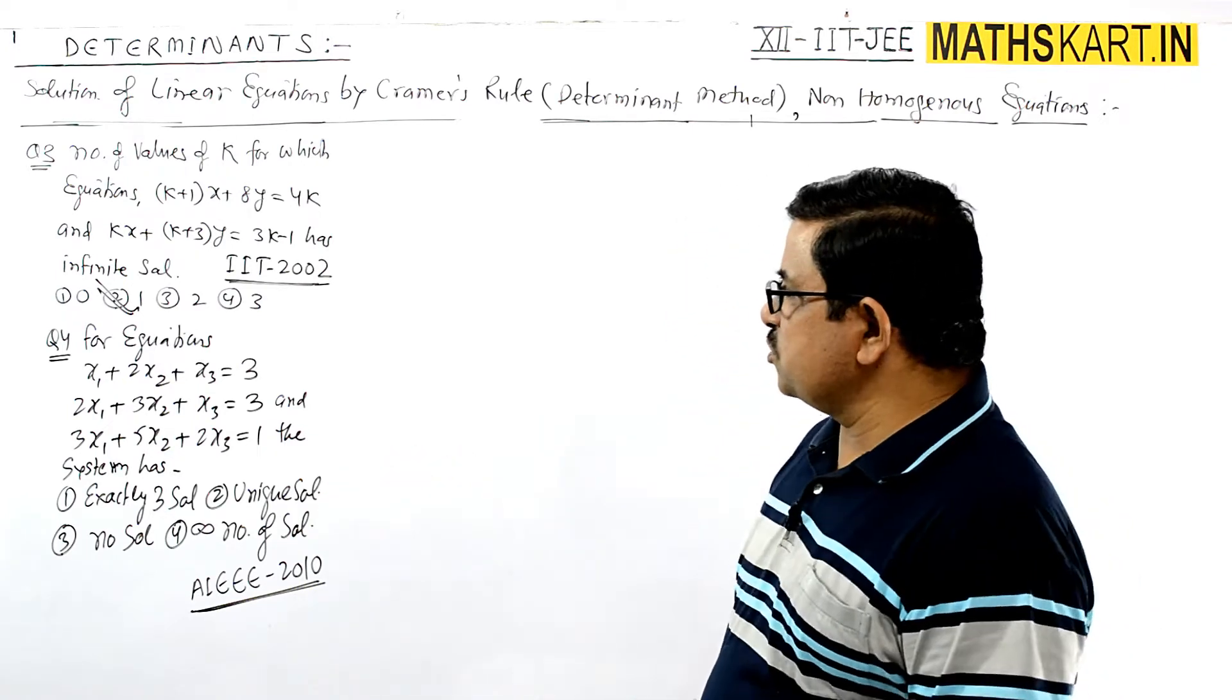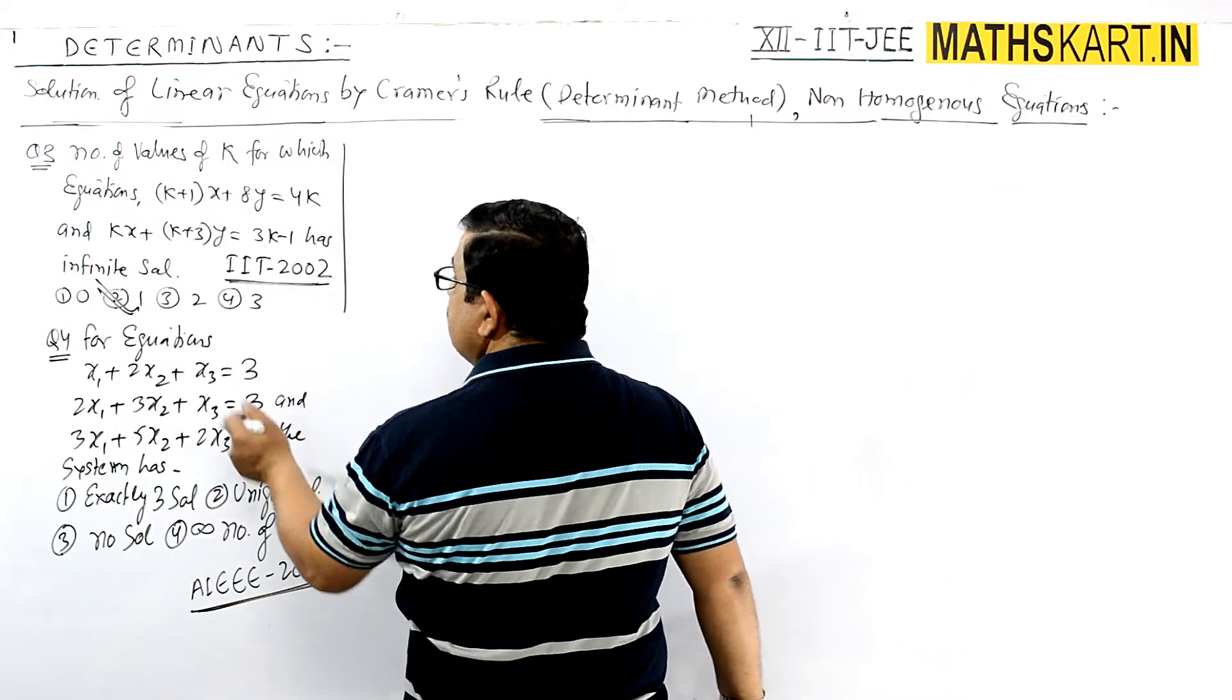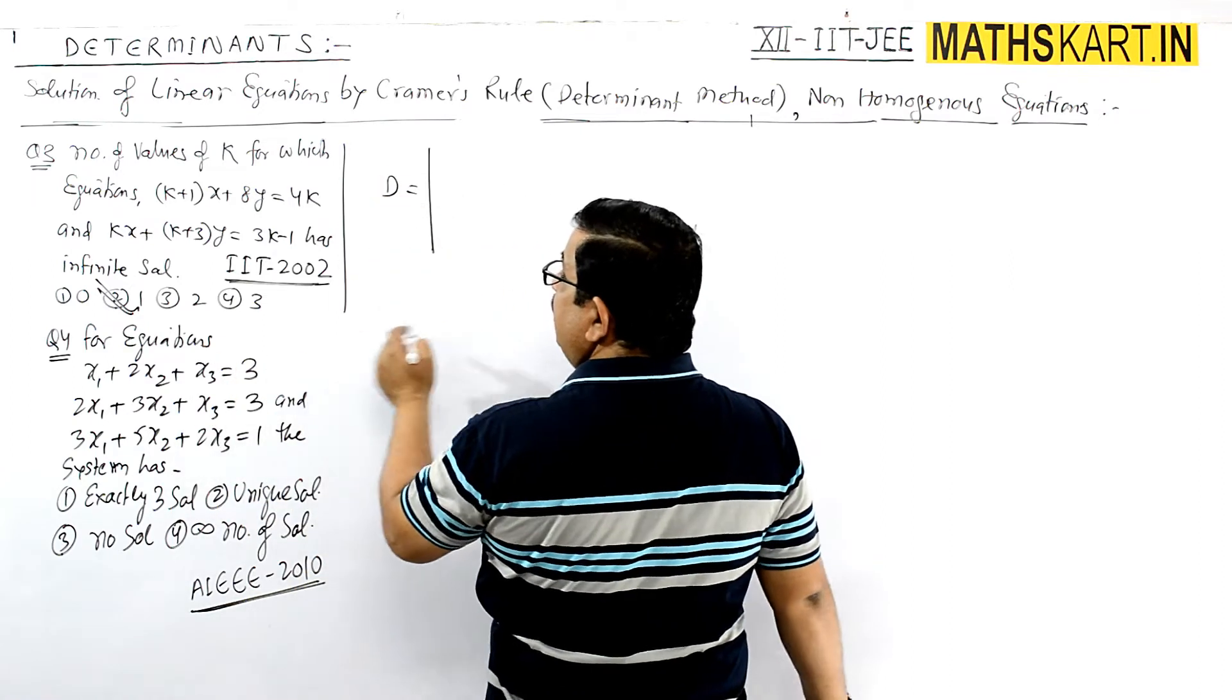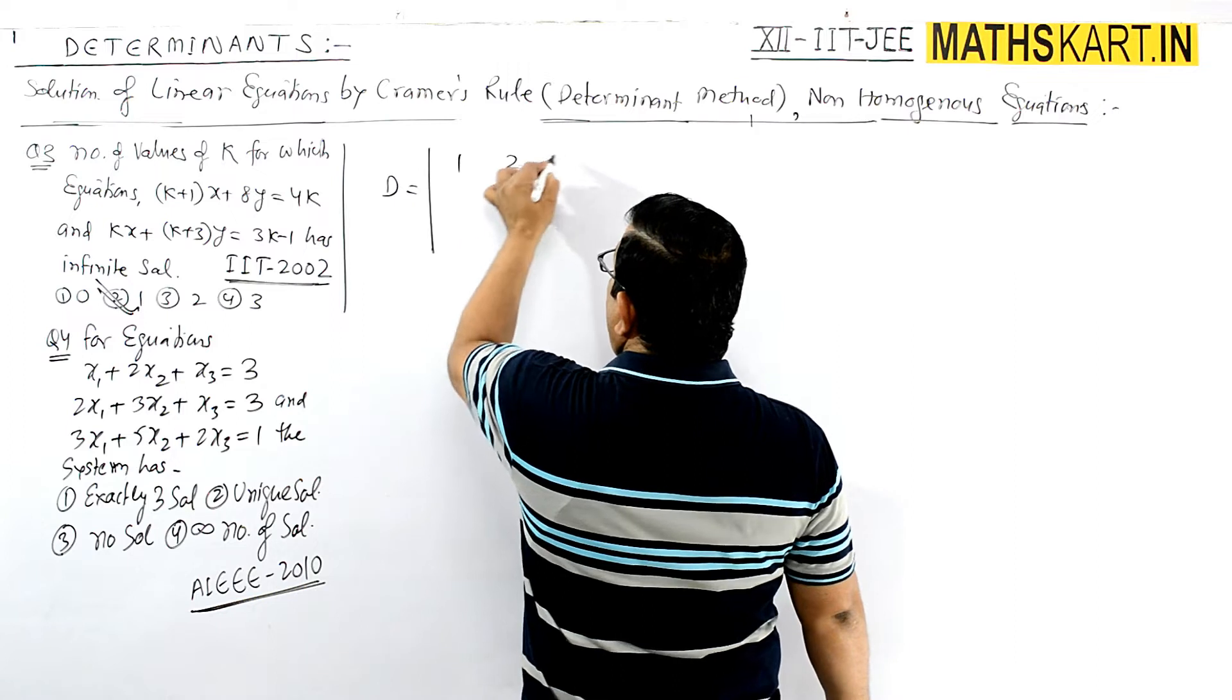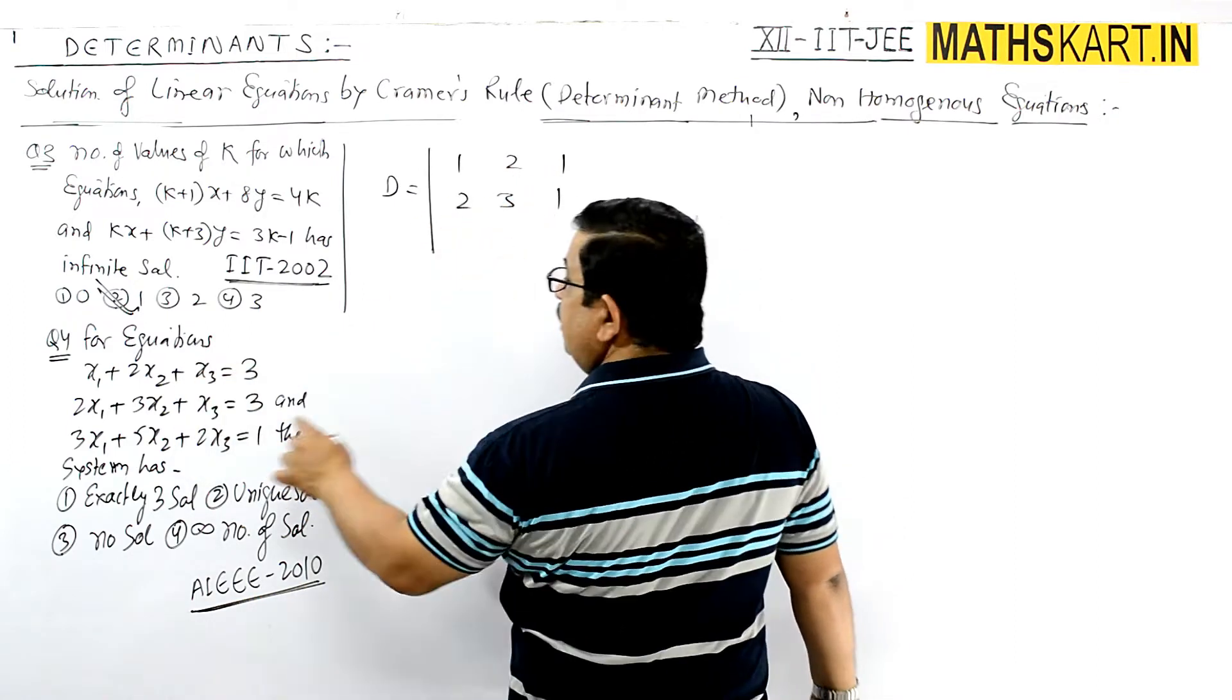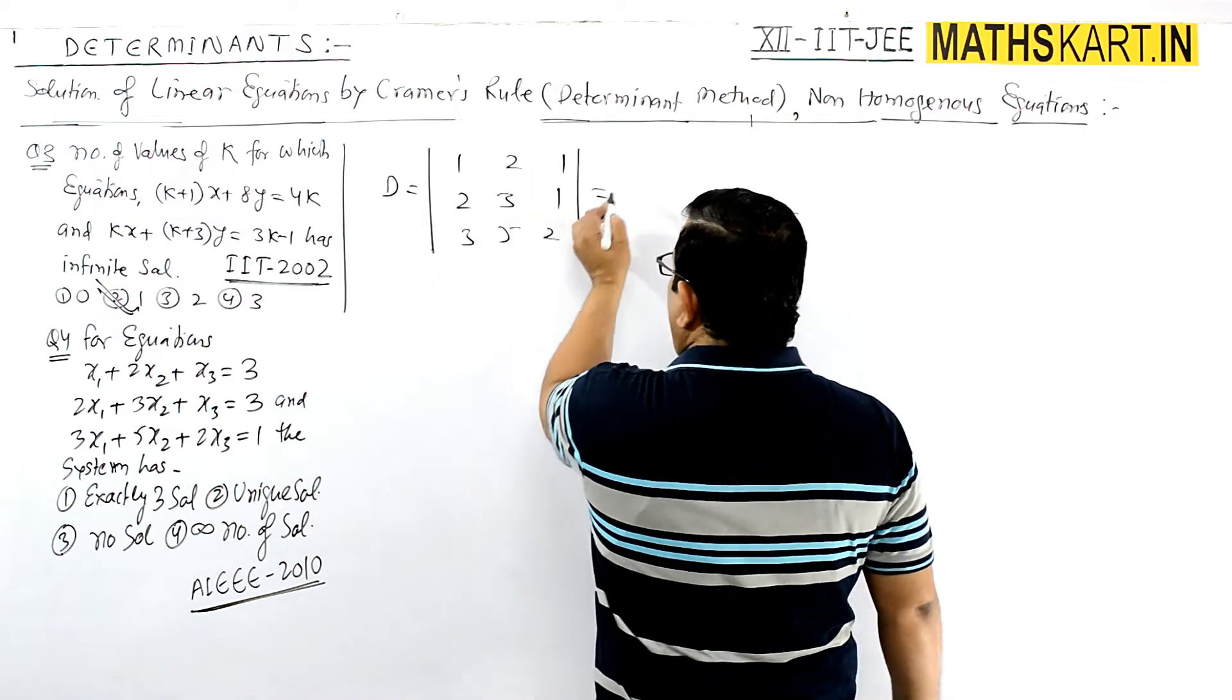or infinite solutions. First, we'll check D. The coefficient determinant is |1, 2, 1; 2, 3, 1; 3, 5, 2|. Let's calculate this value.